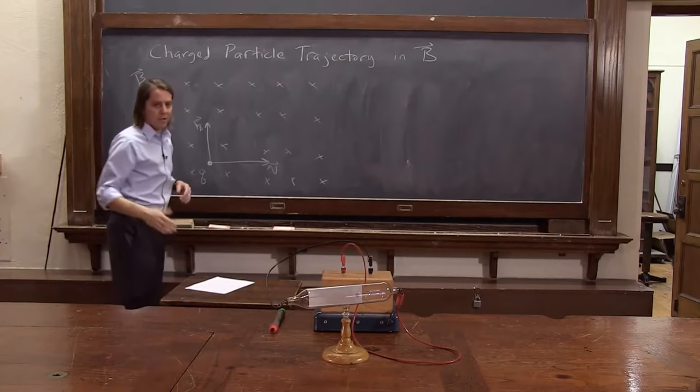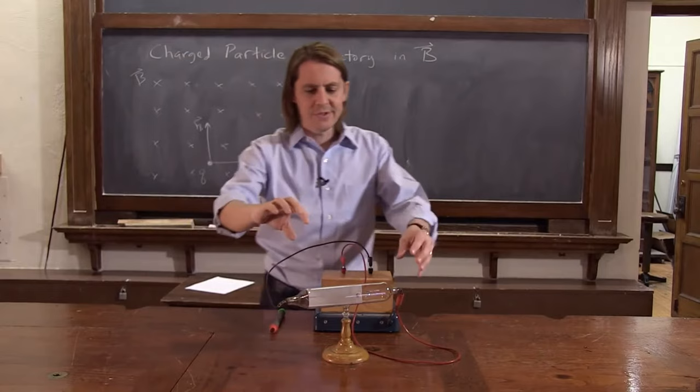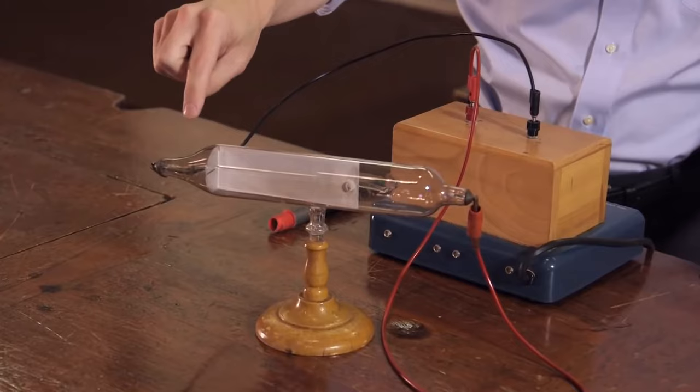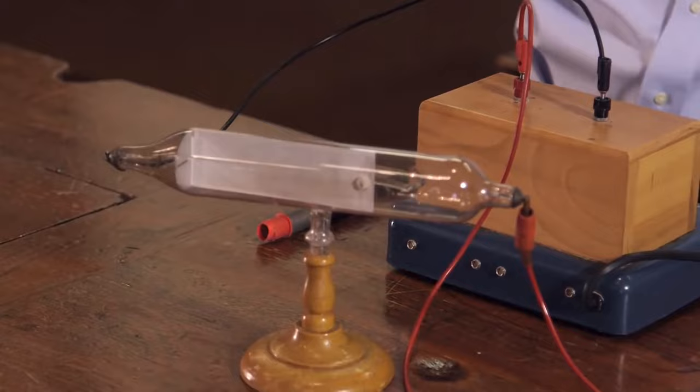I can actually show you that with a real charged beam. So this is an evacuated tube and it puts a big negative potential on this electrode. So high that it actually boils, electrons come off the electrode, it makes just a beam of electrons.